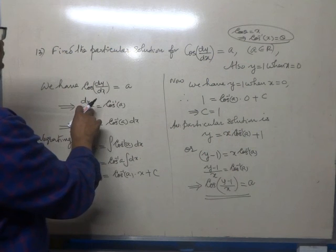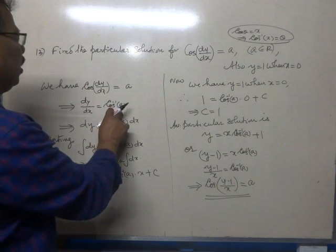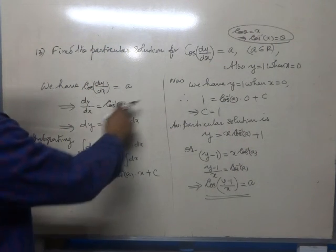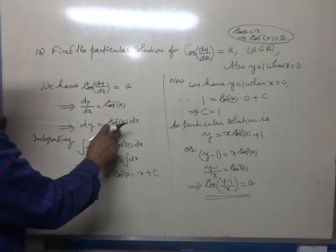Similarly, dy/dx must be cos inverse a. Cross multiplying, dy is equal to cos inverse a dx.